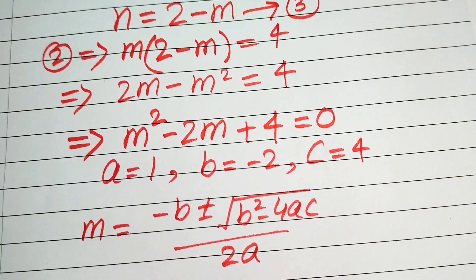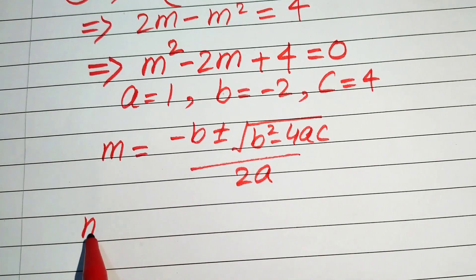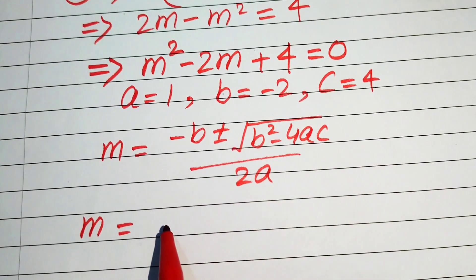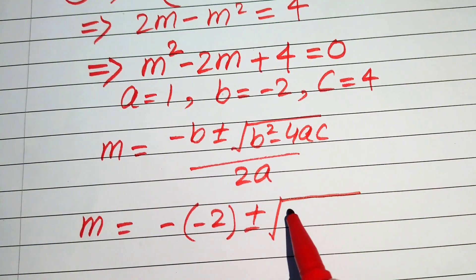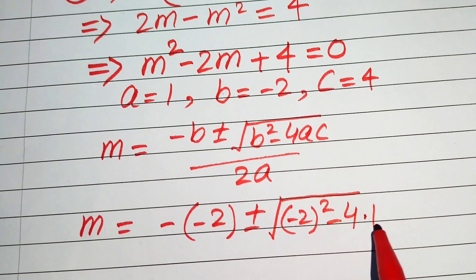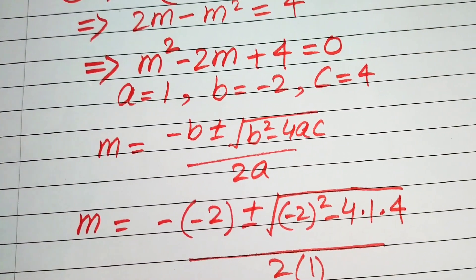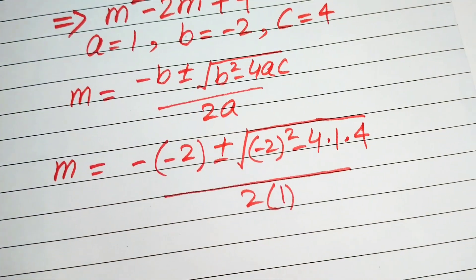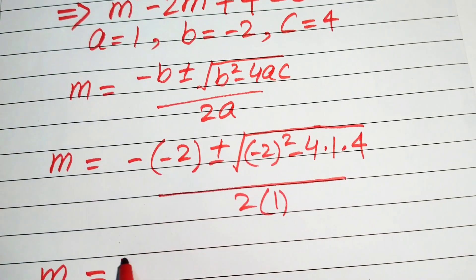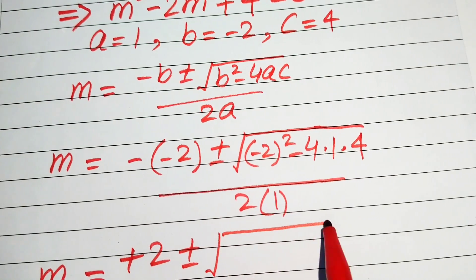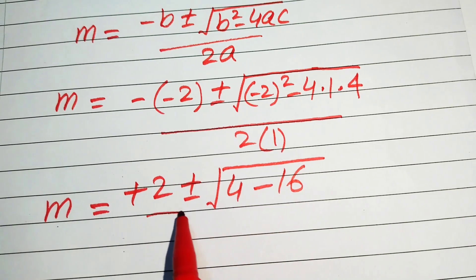Now we substitute the values of a, b, and c into the formula. We have m equals negative of minus 2, plus or minus square root of (minus 2) squared minus 4 times 1 times 4, all divided by 2 times 1. Simplifying: minus times minus 2 gives plus 2, and (minus 2) squared equals 4, and 4 times 4 equals 16, all divided by 2.